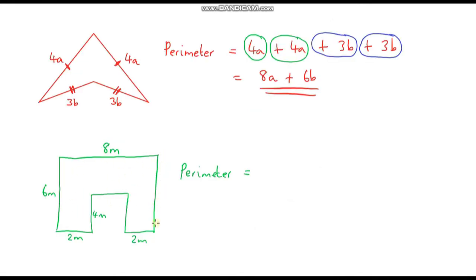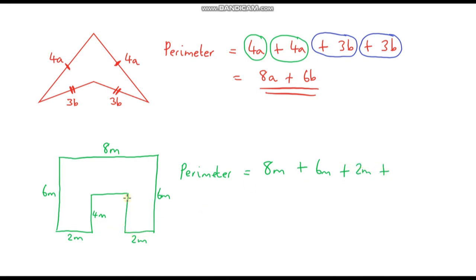Let's do one more example. Notice again we have missing side lengths. Starting at the top, we add 8m, then this side which is the same as the opposite side so that's 6m, then the bottom which is 2m, then this side which matches the opposite so that's plus 4m.